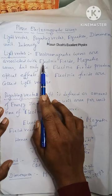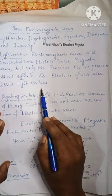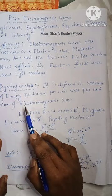Light vectors: electromagnetic waves are associated with electric fields and magnetic fields, but only the electric field produces optical effects. So electric fields are called light vectors. The Poynting vector is defined as the amount of energy radiated per unit area per unit time of electromagnetic waves.